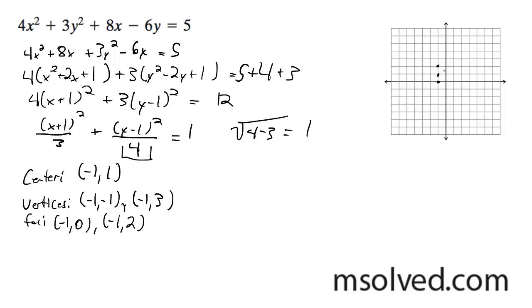So our minor axis is just root 3, so it's going to be about there, about there. And negative 1, negative 1, not 1, 3.